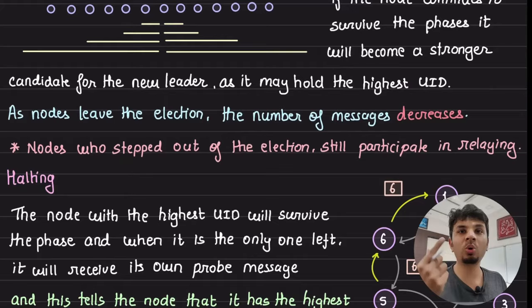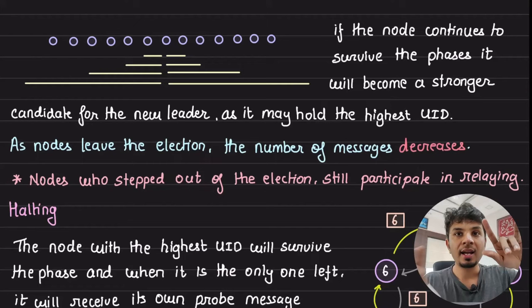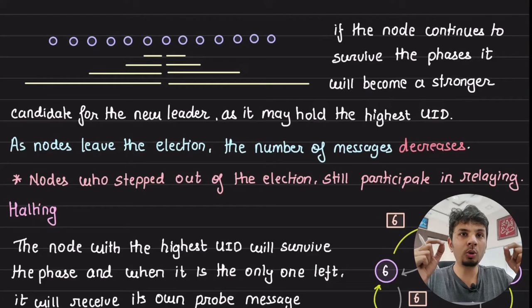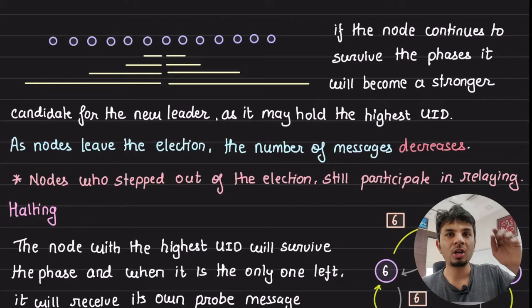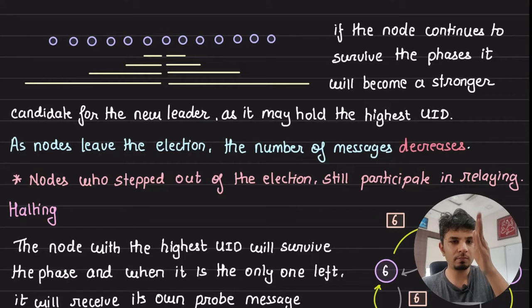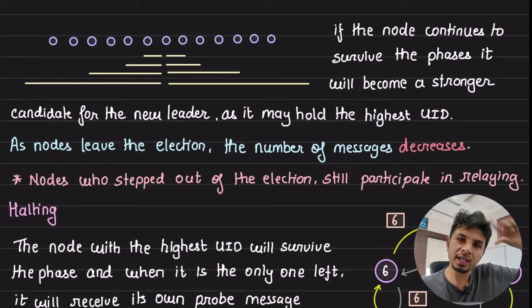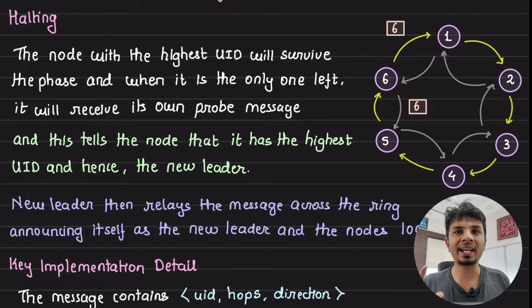One key thing to note: since it is a bidirectional ring and every node only knows its immediate neighbors, even nodes that have stepped out of the election — because they have a smaller UID and know they won't be the global maximum — still relay messages. They are not active candidates but continue forwarding messages, doing comparisons along the way. They are still participating as relays, just not as candidates.